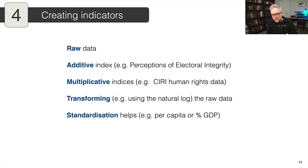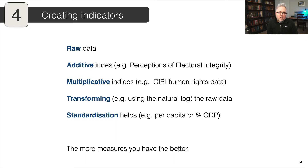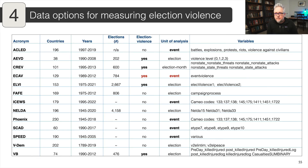There are many ways to create indicators, use raw indicators, or transform them to better connect to your theory. The key takeaway is that the more measures you have, the better. If you include indicators from one source like Polity and another like VDEM, and they both tell you the same thing, you have greater confidence that your evidence is capturing the relationship you've theorized. The more robust your results are to transformation, standardization, or different indices, the more confident you can be in your evidence and your ability to reject the null hypothesis. That's why I've gathered all these different data on election violence — to have increased confidence in my aggregate-level analysis.